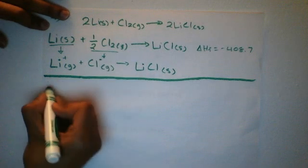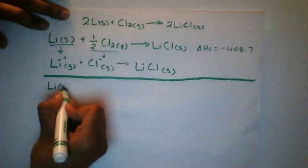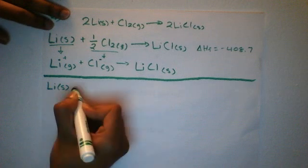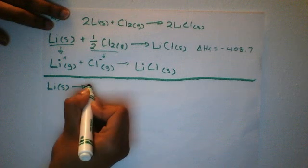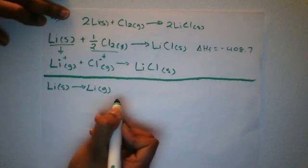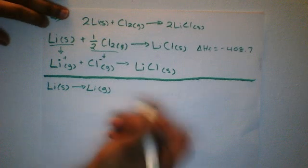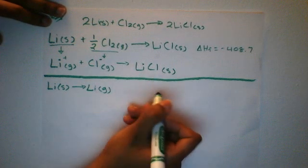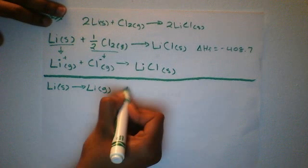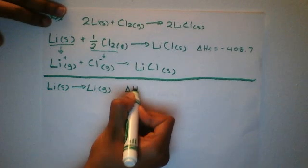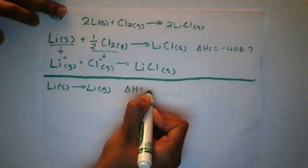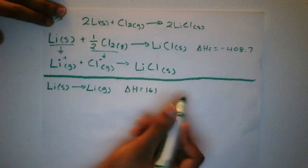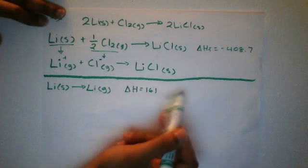Starting with lithium solid, we want to get to Li+ gas. The first step is to turn it into a gas: lithium solid to lithium gas. That is given by the enthalpy of sublimation — sublimation being the transformation of a solid to a gas — and delta H equals 161 kJ. All energies are in kilojoules.